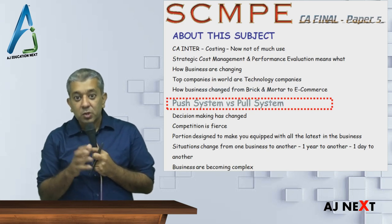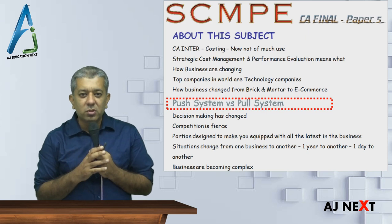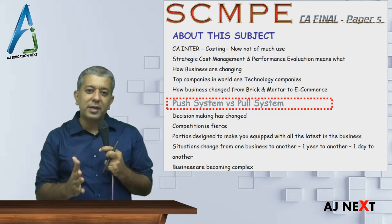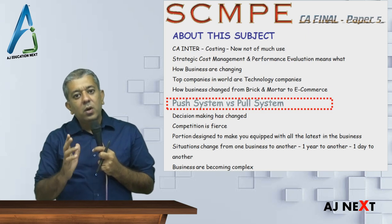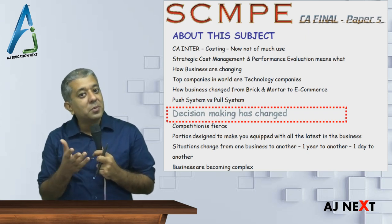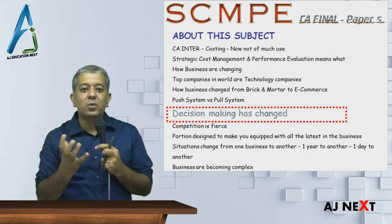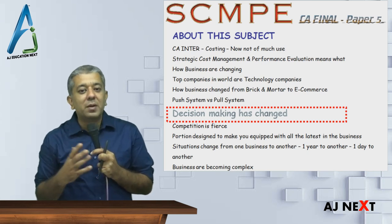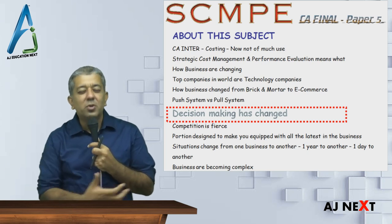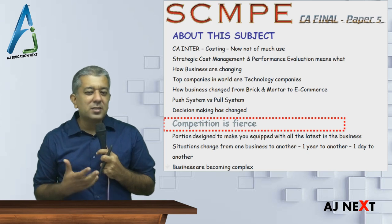Companies are shifting from push system to pull system. Your syllabus topic of Just-In-Time system concentrates right on this particular thing only - how can a company shift from push system to pull system. Decision making has changed; earlier it was very simple. Now there are so many customers, and trying to analyze that data is a huge thing. Competition has increased so much.